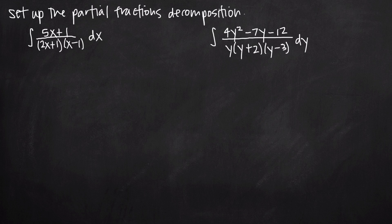In this video we're going to be talking about how to set up a partial fractions decomposition and two different ways to solve for the constants in that decomposition. We're going to be working with two different integrals. The first one is the integral of 5x plus 1 divided by quantity 2x plus 1 times quantity x minus 1. We're going to start with this example and then do a second example.